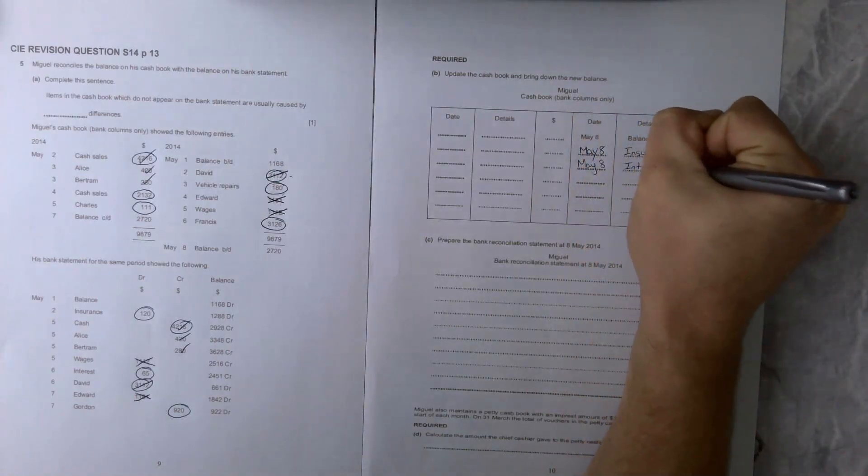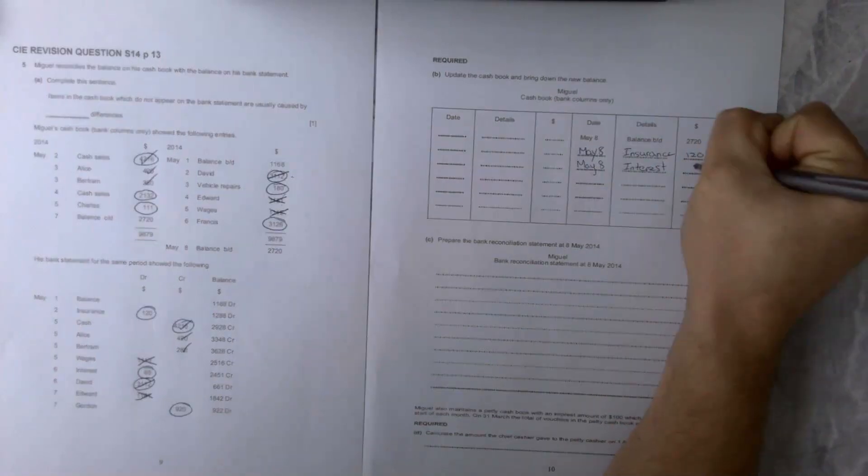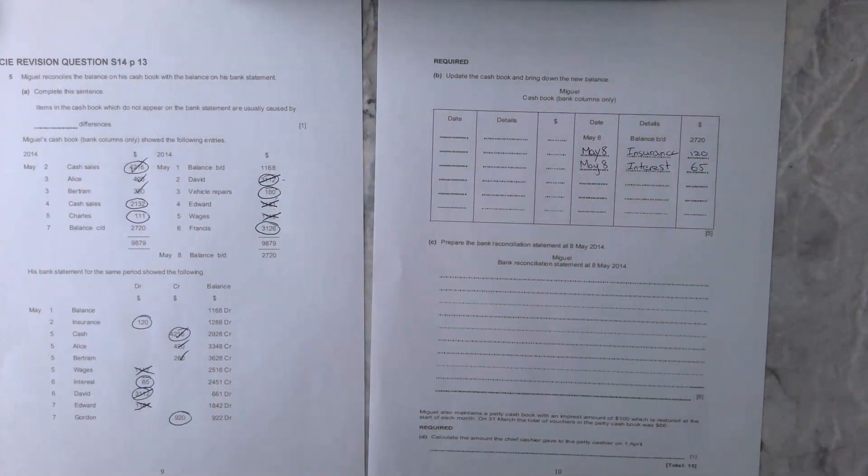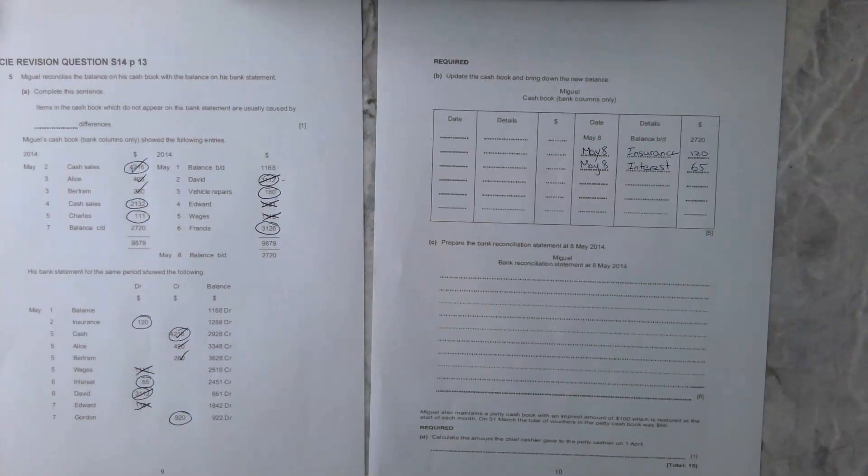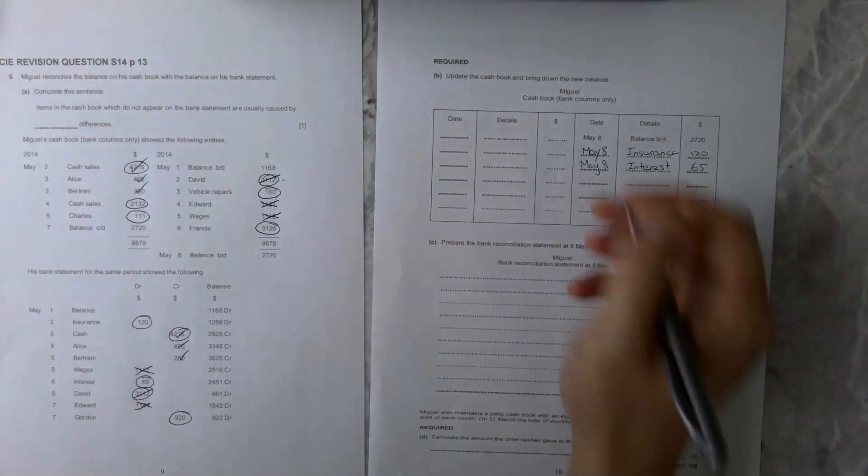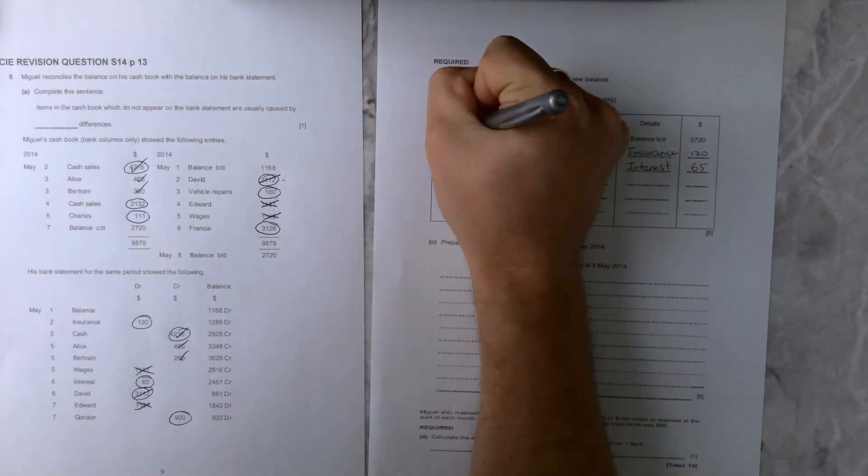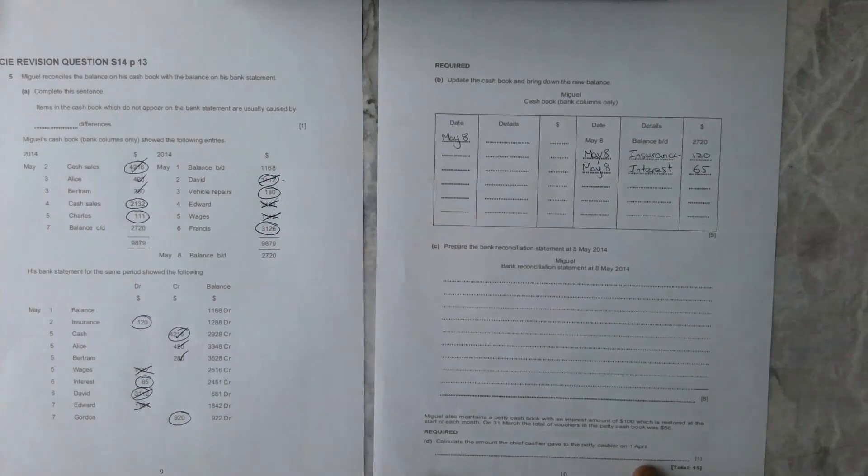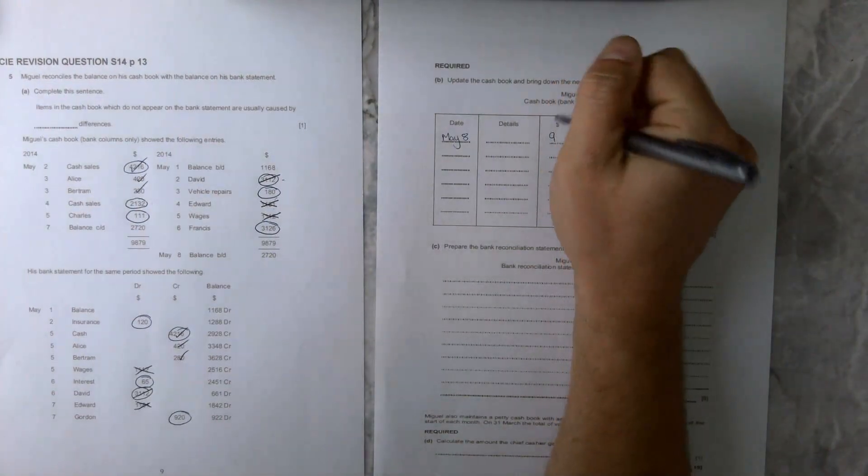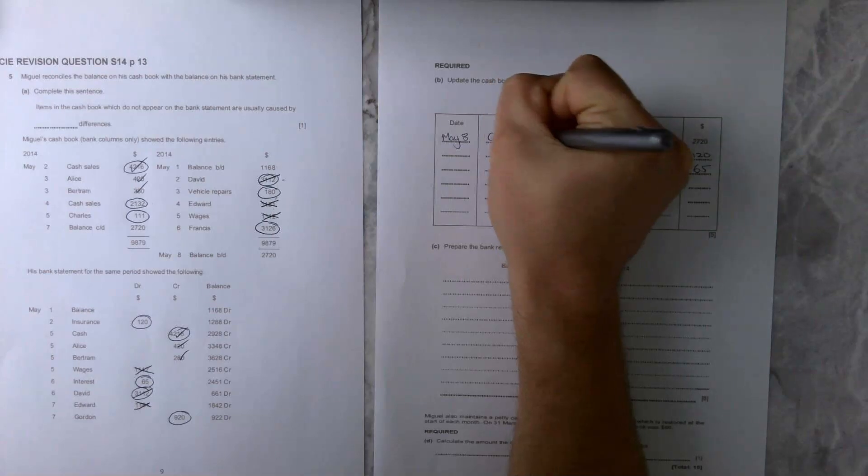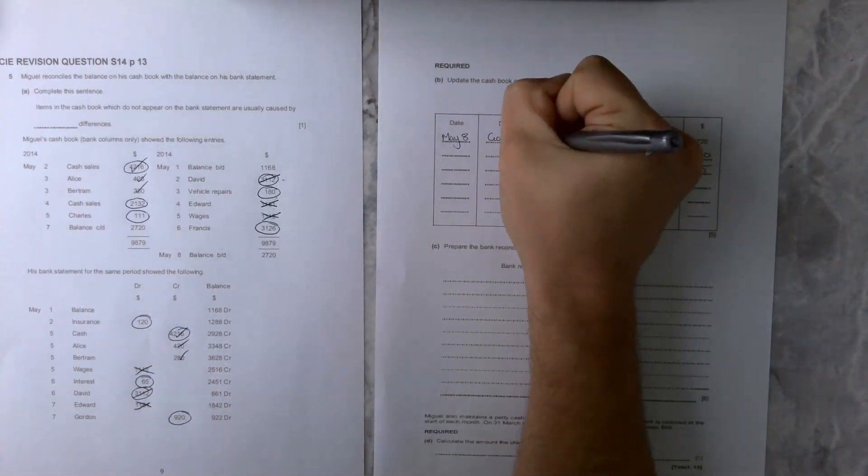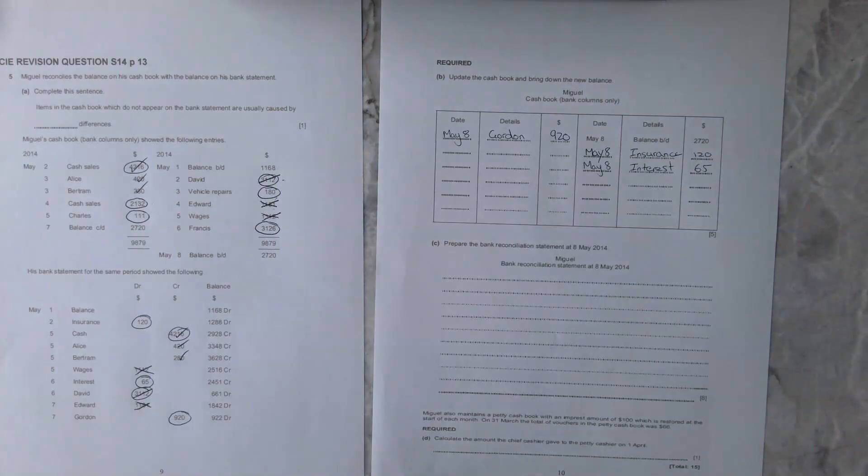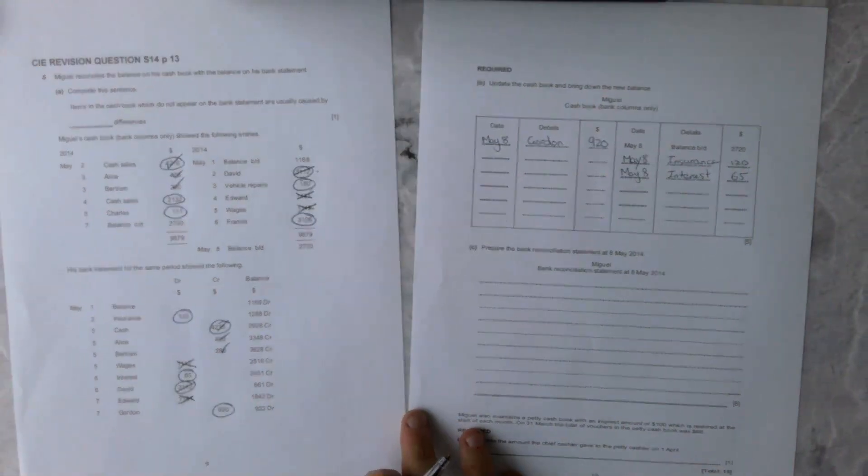On the left hand side, we know Gordon has been missing from our book because he has paid us and we just haven't recognized that he has paid us yet. We're just going to chuck that into our cash book at $920, and we're going to call that Gordon. It just means that the check's come in but we haven't realized that the check has come in yet.